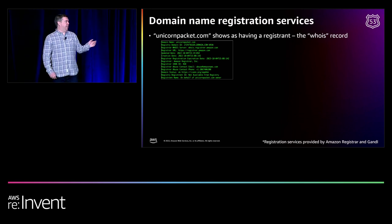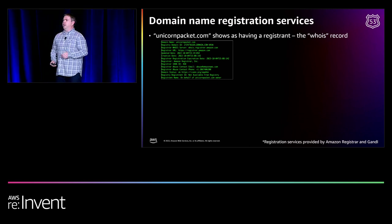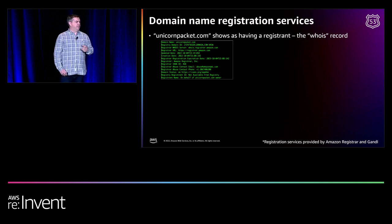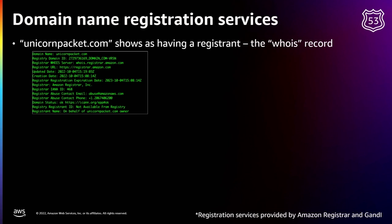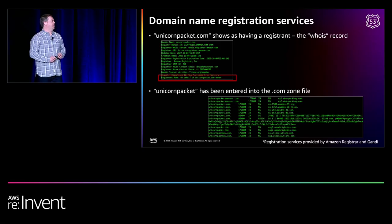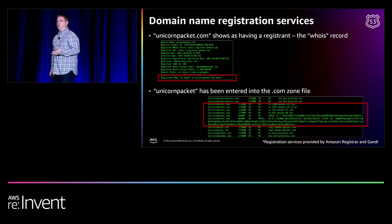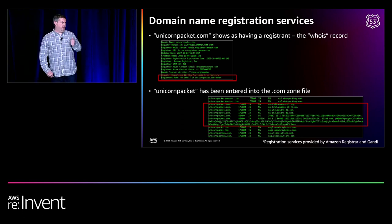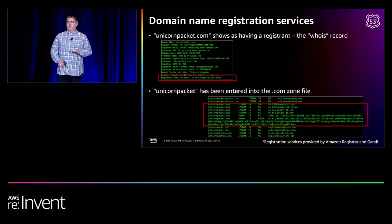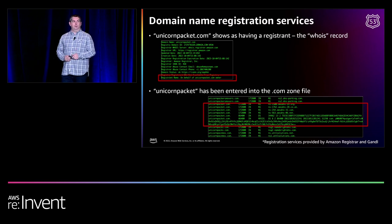So how do you register a domain name in Route 53? It really is quite simple. You type the domain name into the console, choose which top-level domain — in this case .com — and check whether it's available. Once done, it's simply a case of providing contact details — administrative, technical, and billing. Privacy protection is then enabled so that information is not publicly put in the WHOIS record. We will also create a public hosted zone for this in Route 53 when you register the domain name, putting the entry in the .com top-level domain to delegate it to Route 53.